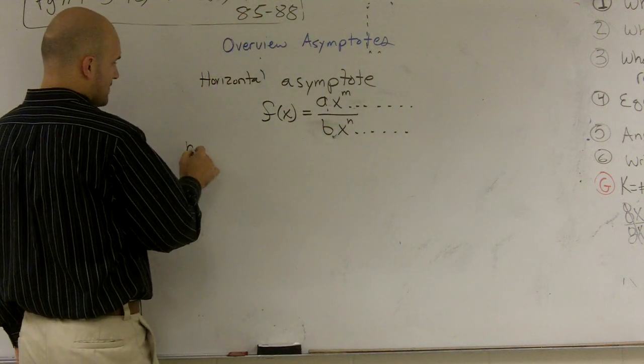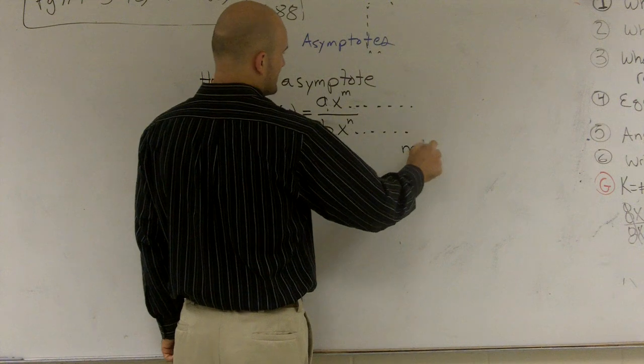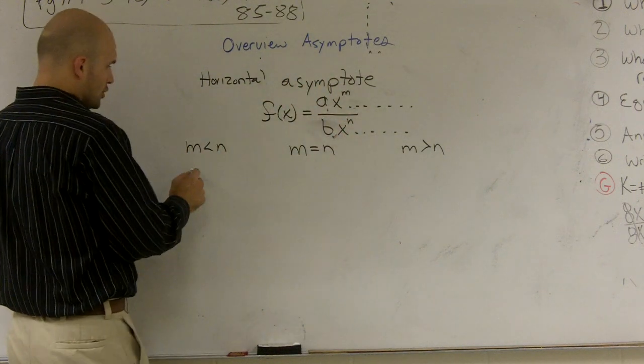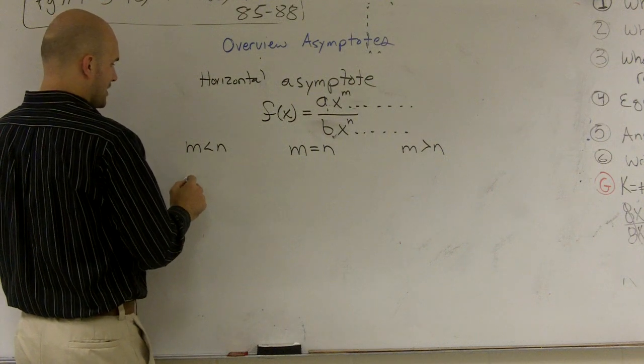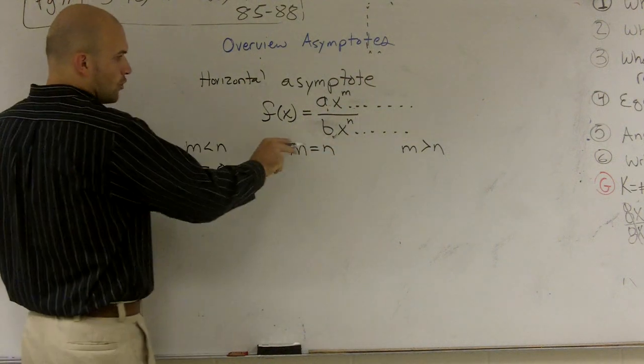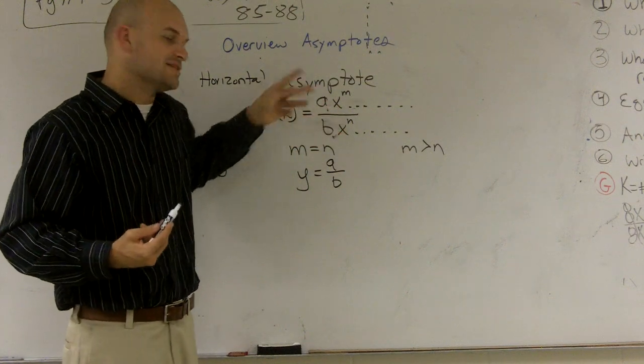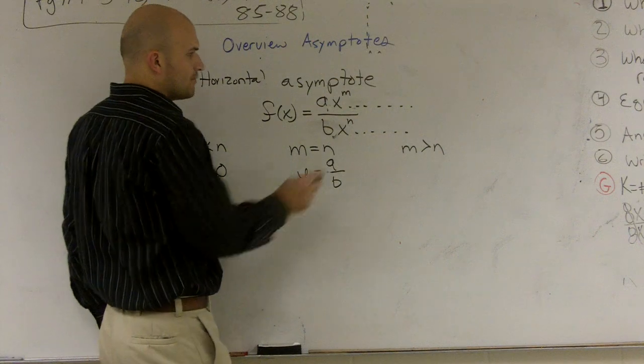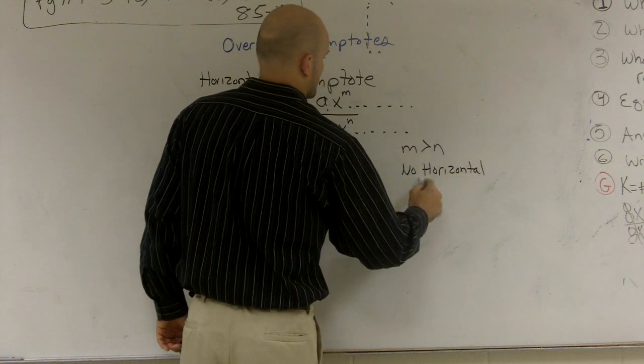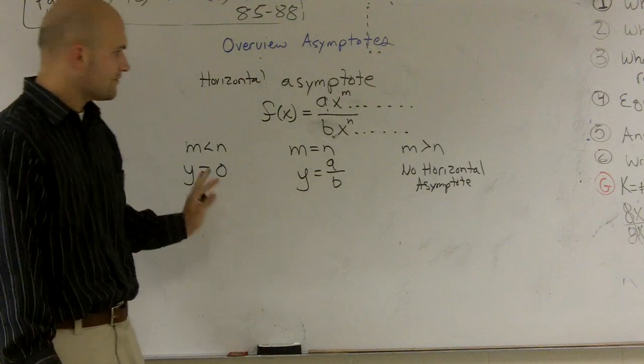When I have M is less than N, when I have M is equal to N, and when I have M is greater than N. Here, when your exponent up top is smaller than your exponent on the bottom, your horizontal asymptote is going to equal y is going to equal 0. That means your horizontal asymptote is going to be the x-axis. When it's equal to each other, you're going to have y equals A over B. So you're going to take your two coefficients of your leading term, divide them, and that will be your horizontal asymptote. And then over here, when it's greater, there is no horizontal asymptote. And there's something else we're going to learn from there a little bit later. But for right now, there's no horizontal asymptote.